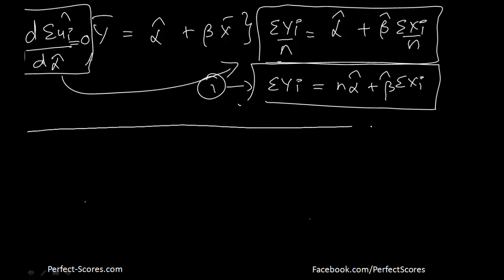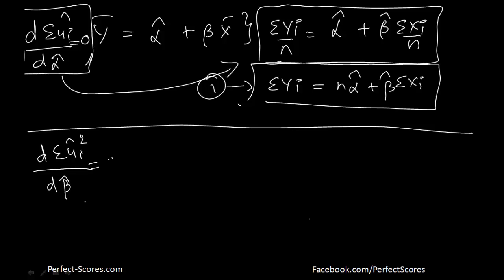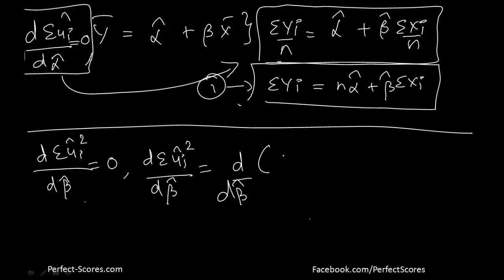Now we'll try to do another thing. We'll try to say that the derivative of the sum of the square of the error term with respect to β̂ is supposed to be equal to 0. So the derivative of the error term squared with respect to β̂ is going to be the derivative with respect to β̂ of summation of (yᵢ minus α̂ minus β̂·xᵢ) whole square.